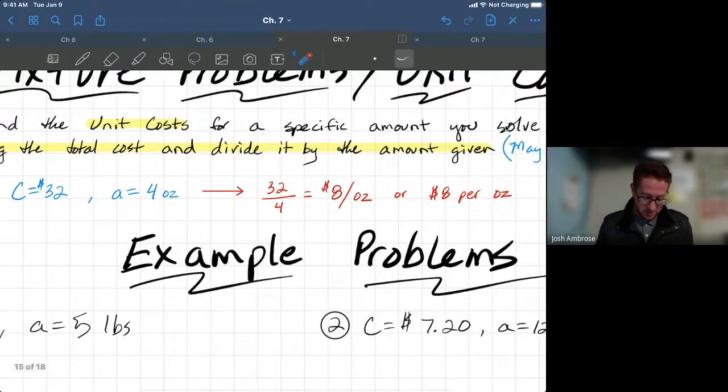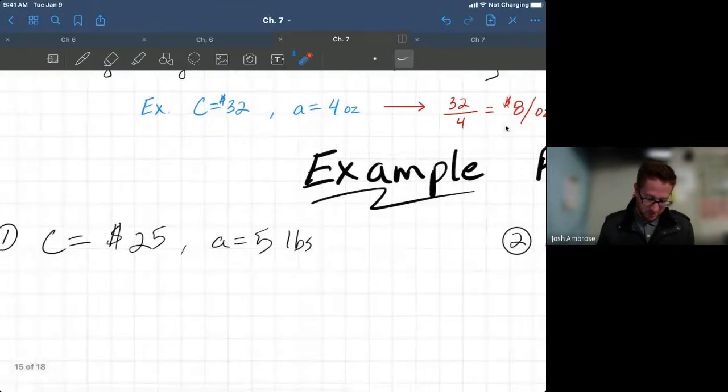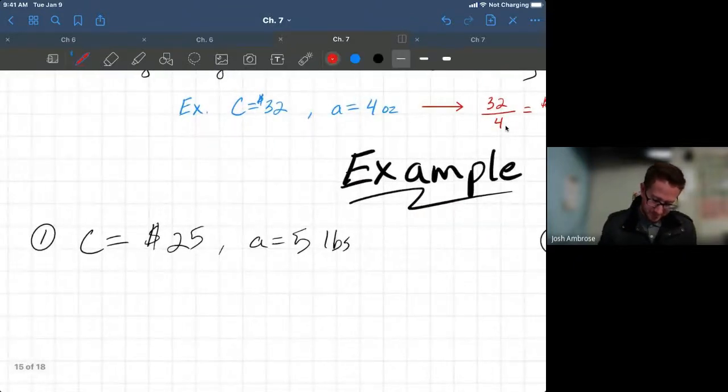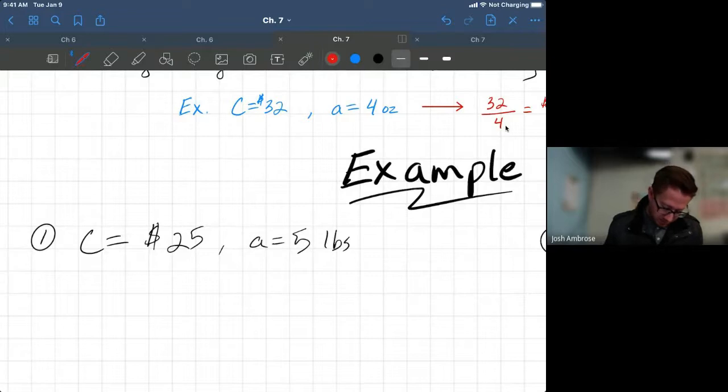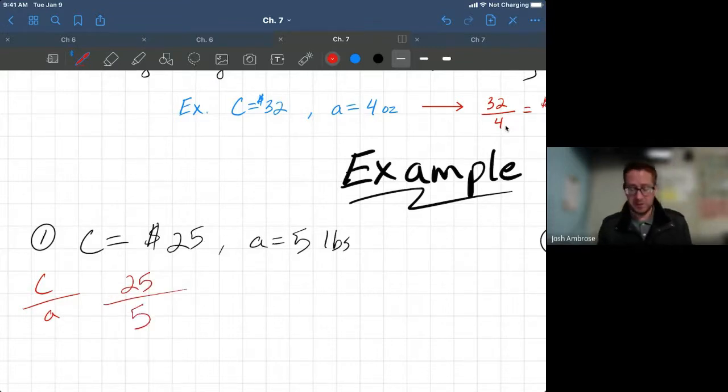Let's jump into the first example problem. Remember, equation, total cost divided by amount, meaning 25 divided by 5. Everybody should be saying this, screaming it out loud. It's 5. Now we're not done because units do matter. Just like in the last section, the units do matter.